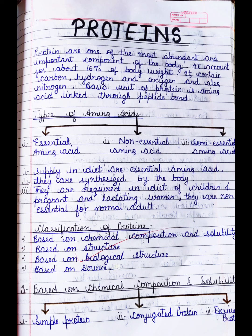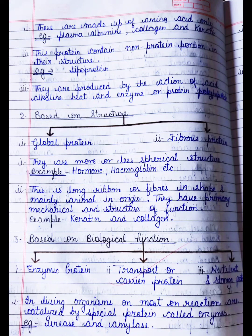Next is the classification of proteins. Proteins can be classified into four types: based on chemical composition and solubility, based on structure, based on biological function, and based on source. First, based on chemical composition and solubility, proteins are divided into three categories: simple protein, conjugated protein, and derived protein. Simple proteins are made up of amino acids only — examples are plasma albumin, collagen, and keratin. Conjugated proteins contain a non-protein portion in their structure — example is lipoprotein. Derived proteins are produced by the action of acid, alkali, heat, or enzymes on proteins or polypeptides.